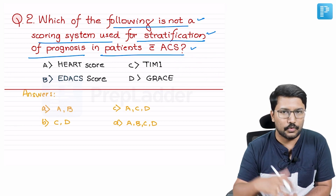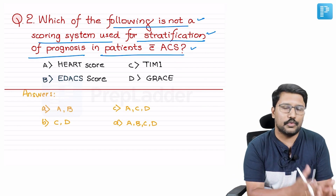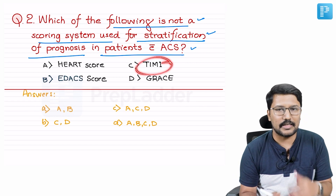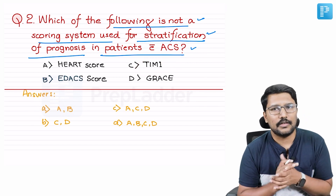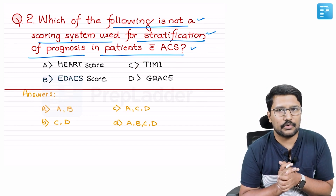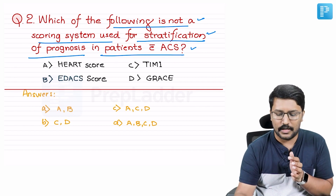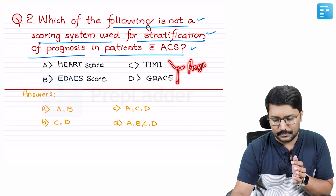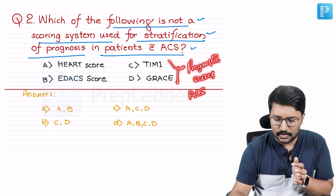GRACE score more than 140 or TIMI score of more than three — we consider those patients for the invasive strategy. We no longer follow the conservative approach of merely giving dual antiplatelet therapy and heparin in those patients. TIMI also has a separate set of criteria for STEMI as well as non-ST elevation acute coronary syndrome. So options C and D are basically prognostic scores in patients with acute coronary syndrome.